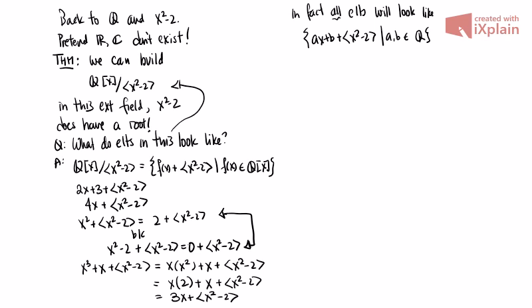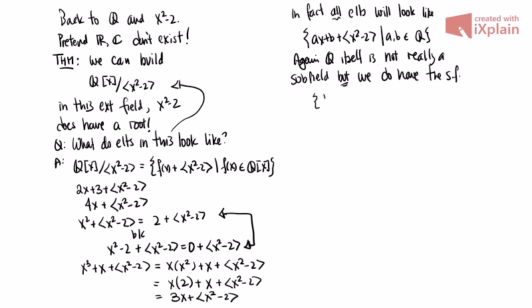This leads us to note that Q itself is not really a subfield of this quotient ring. But we do have a subfield consisting of things that look like b + ⟨x² - 2⟩, and this subfield basically looks like Q — it's an isomorphic copy of Q inside the quotient field.